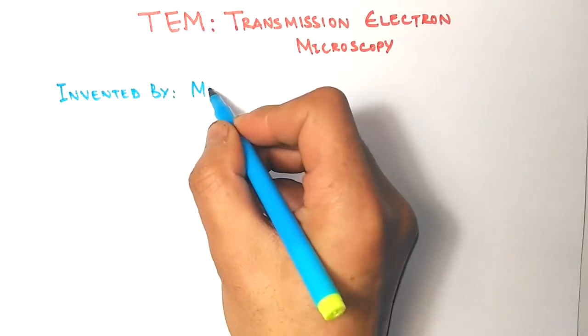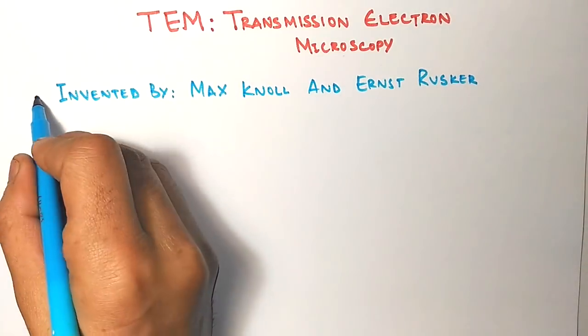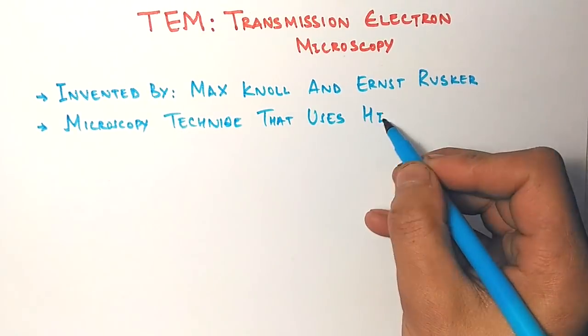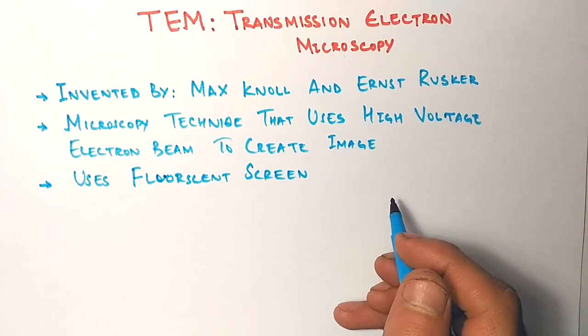Max Knoll and Ernst Ruska invented this type of microscope. This is a technique that uses a high beam of electrons to create the image, and this image is created on a fluorescent screen.